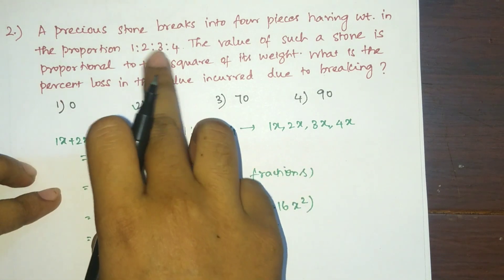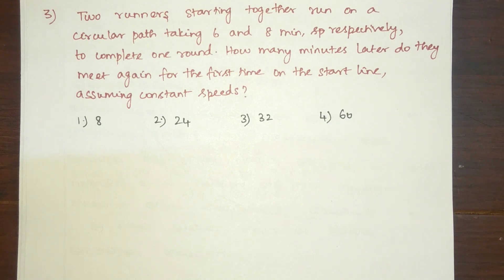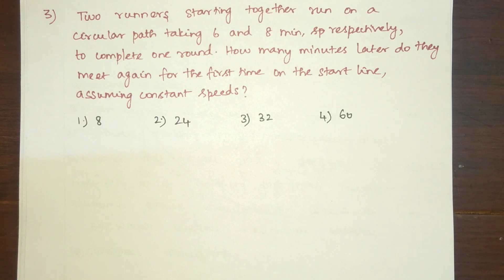Third question: two runners starting together run on a circular path, taking 6 and 8 minutes respectively to complete one round. How many minutes later do they meet again for the first time on the start line, assuming constant speeds? For this problem, we need to find the LCM — the Least Common Multiple.